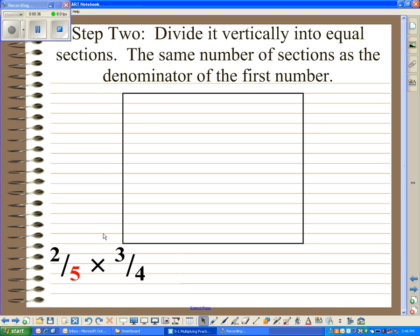The next thing we're going to do is divide our area into five sections, because we're multiplying 2/5 times 3/4. So step two is to divide vertically into equal sections, the same number of sections as the denominator of the first number. In this case, that's five sections. So there's one section, two sections, three sections, and then four and five sections. Five sections approximately equal is the first step two.